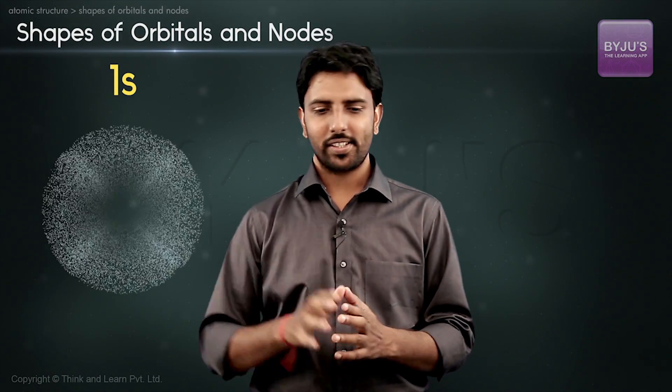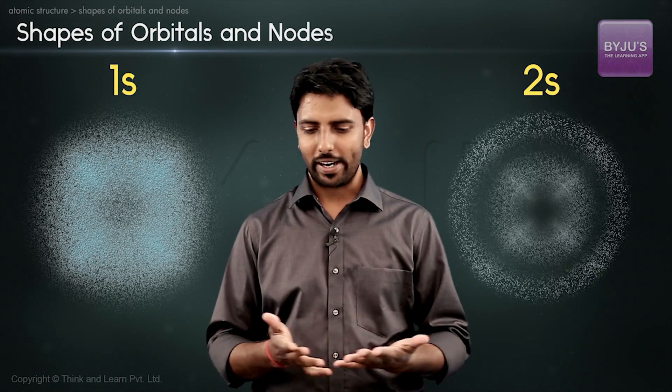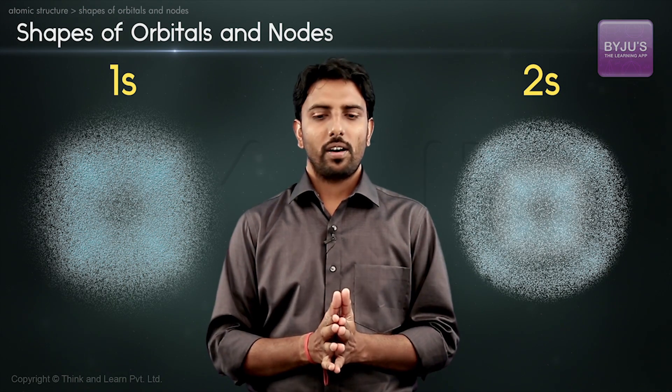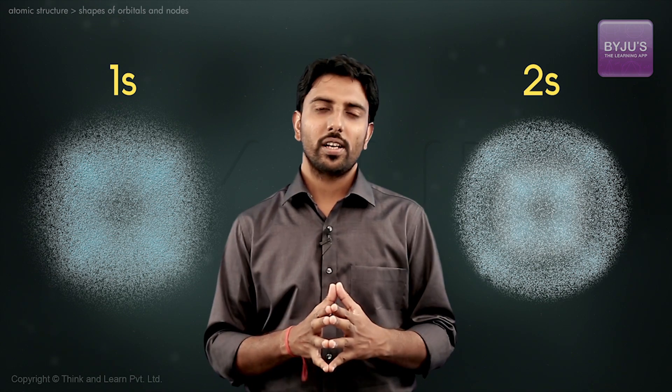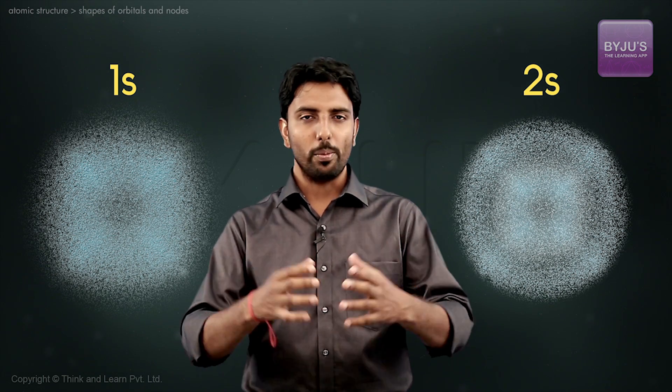We have already seen how the 1s and 2s orbitals look like. In this video, let us take a look at the shapes of other orbitals like p orbitals as well as d orbitals.